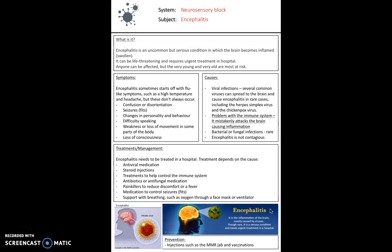Encephalitis is caused by a viral infection, but often a problem with the immune system causes it to mistakenly attack the brain, leading to inflammation. Bacterial and fungal forms also exist though these are rare. Importantly, encephalitis is not contagious. It must be treated in hospital. Treatment depends on the cause and can include antiviral medication, steroid injections, and treatment to control the immune system.